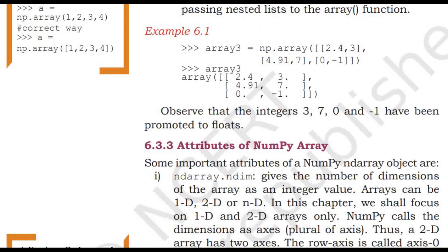Today I want to teach example 6.1, how to create a two-dimensional array. Array3 equals np.array with values [[2.4, 3], [4.9, 1], [7, 0, -1]]. Observe that the integers 3, 7, 0, and -1 have been promoted to floats.